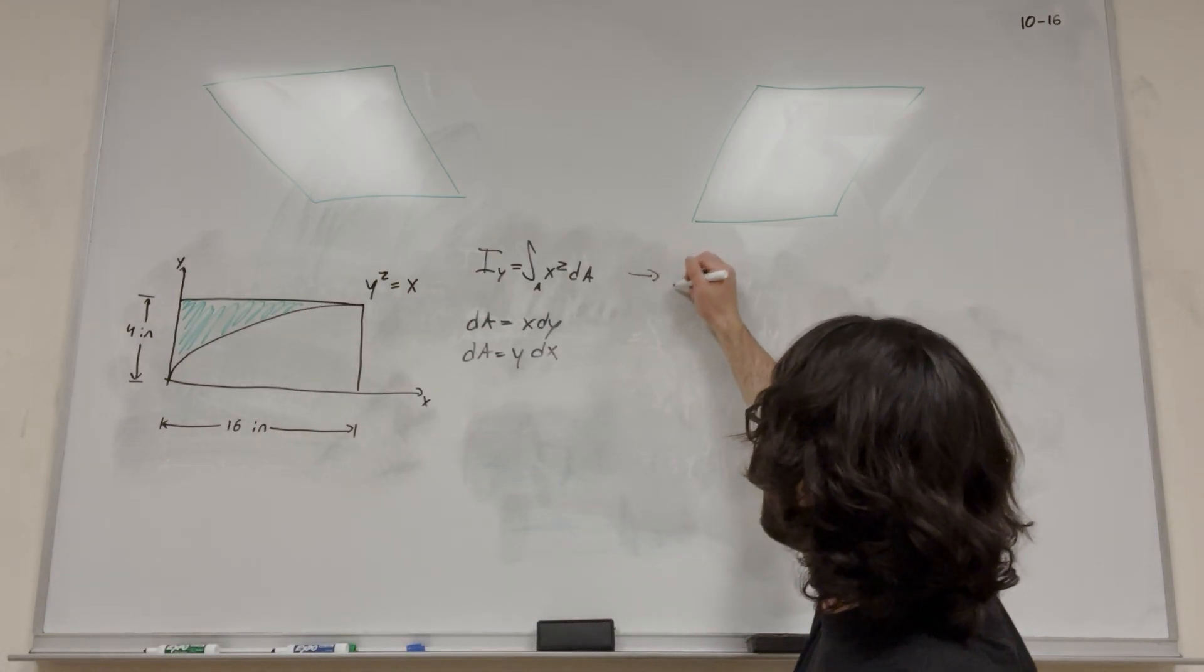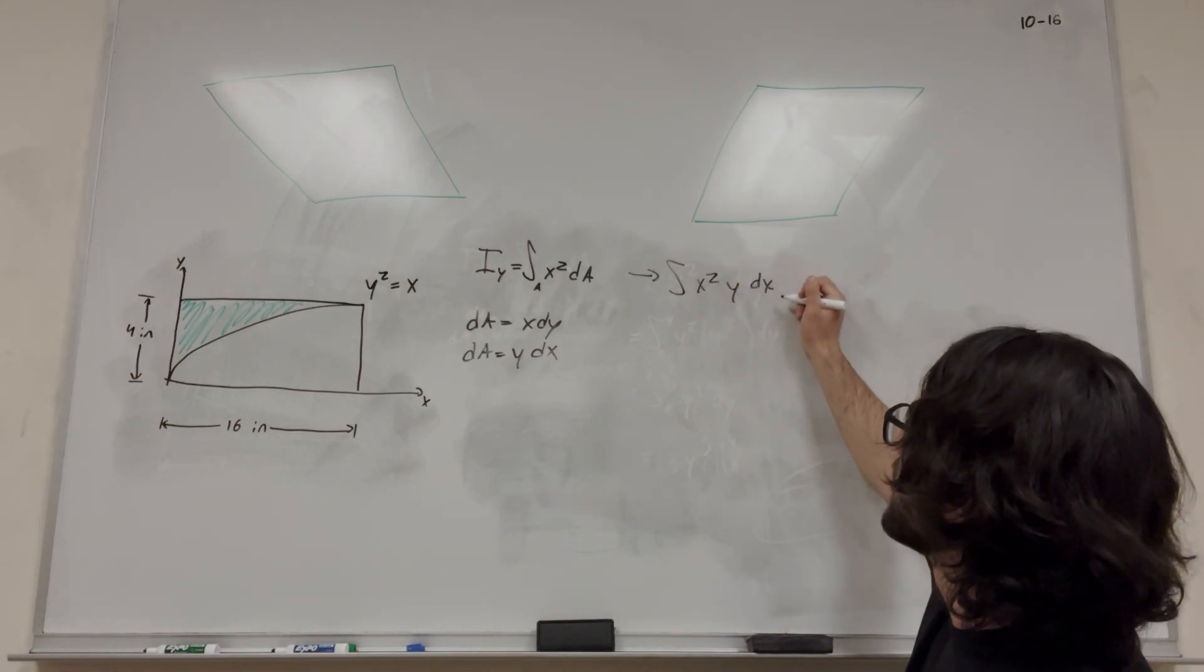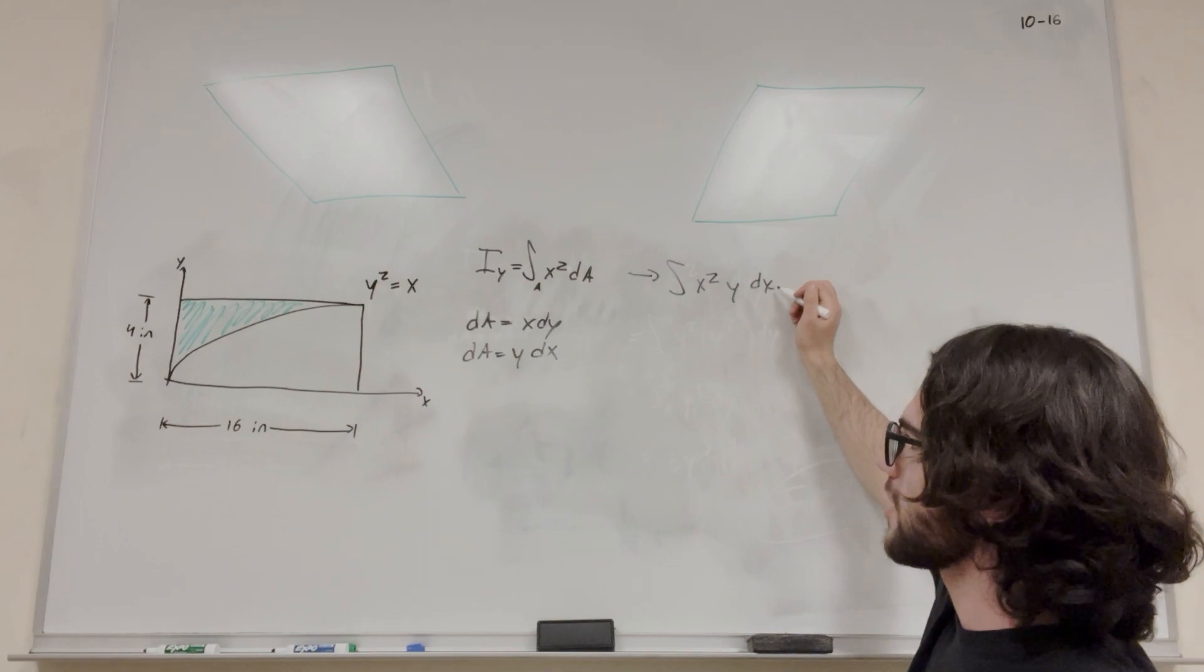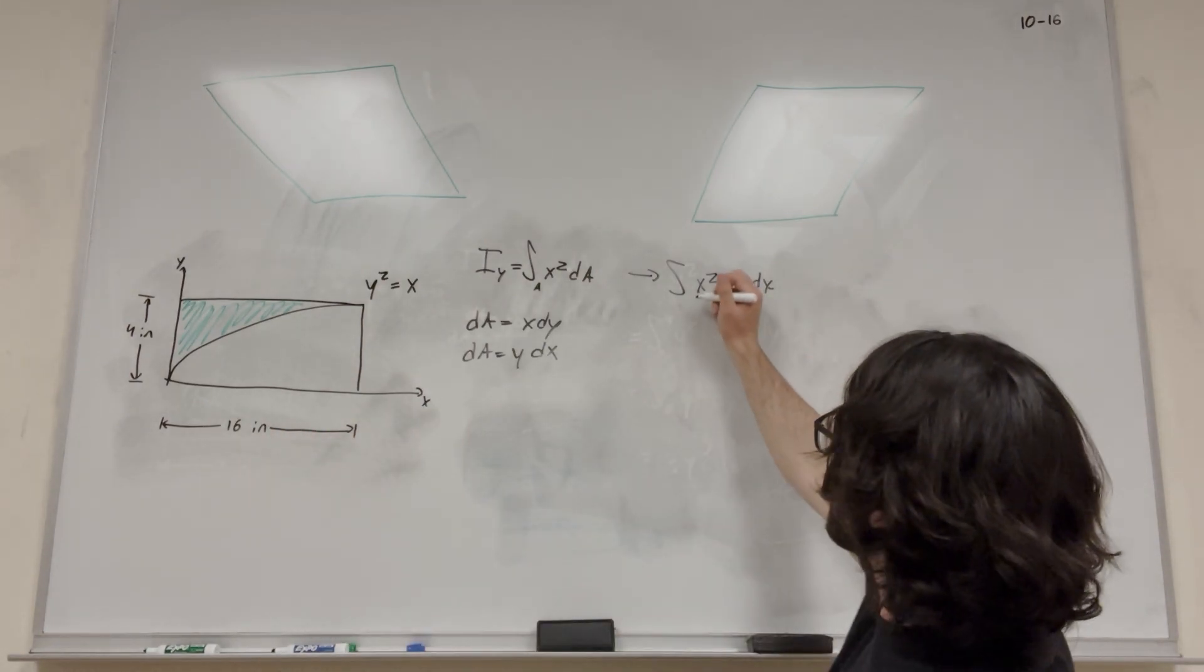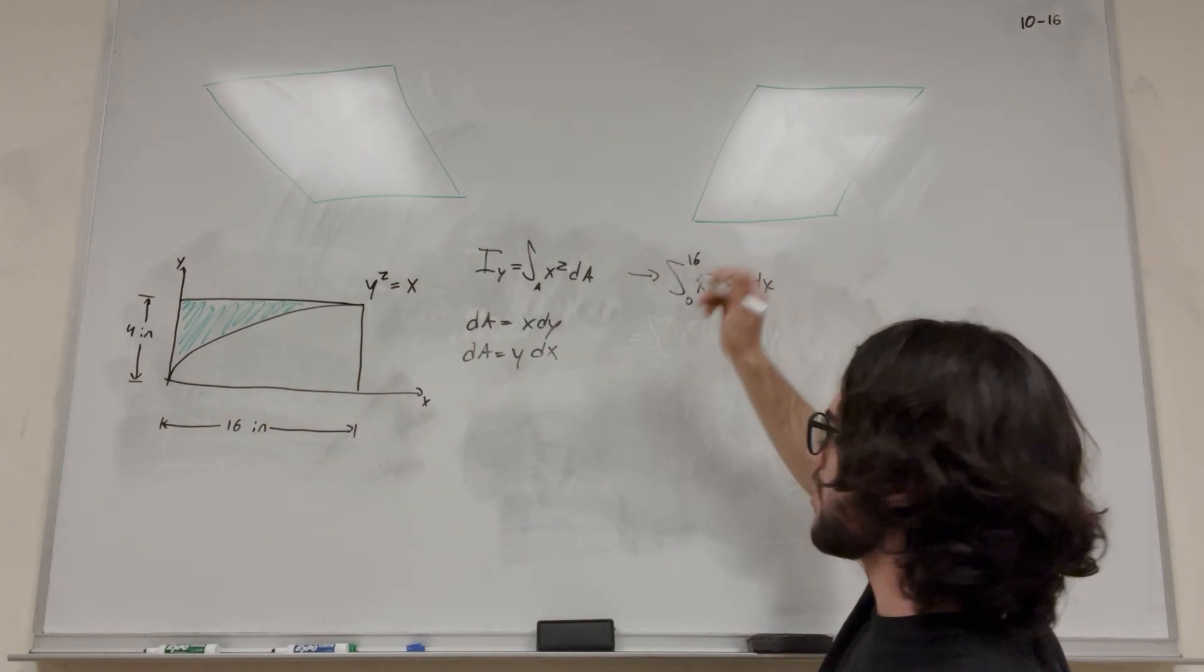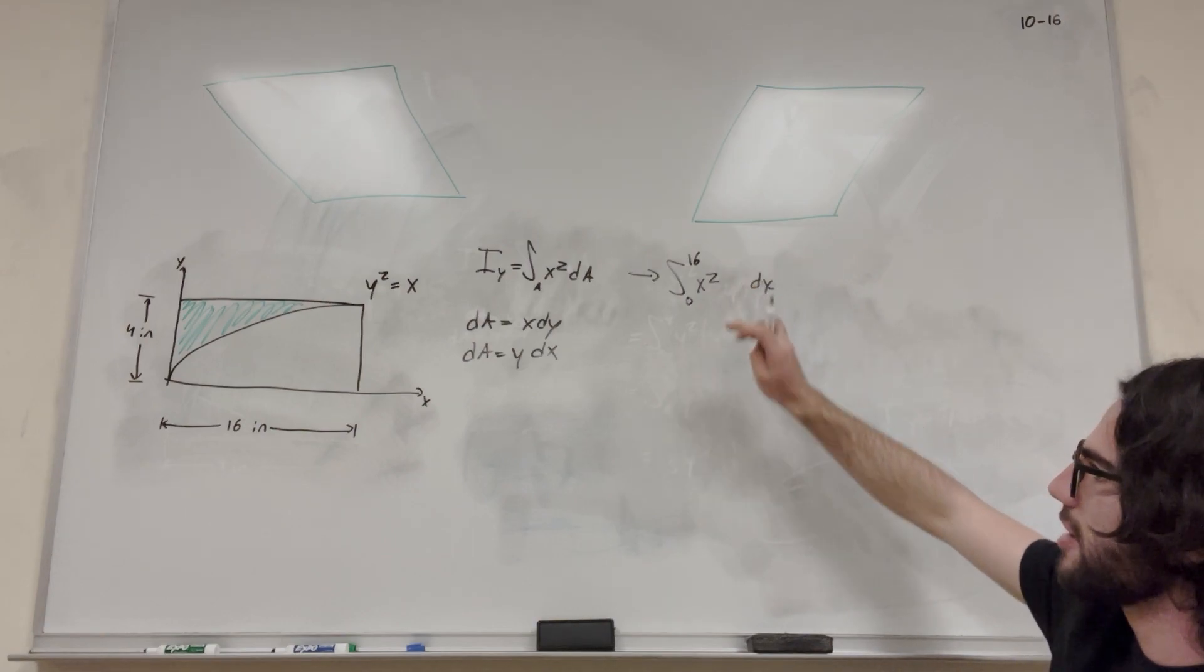Let's go over to here. Now it's going to look like x squared y dx. We're integrating with respect to x. What are the bounds for x? x goes from 0 to 16. But this integral isn't right, and it has to do with this y here. Let's get rid of that before you write it down.